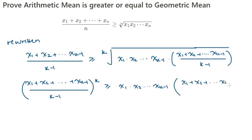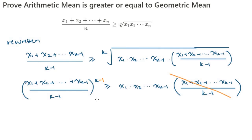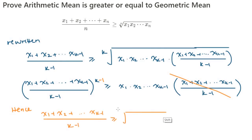Divide both sides by the term in the brackets — we can do this without changing the sign because we know what's in the brackets is definitely positive since each term is non-negative.